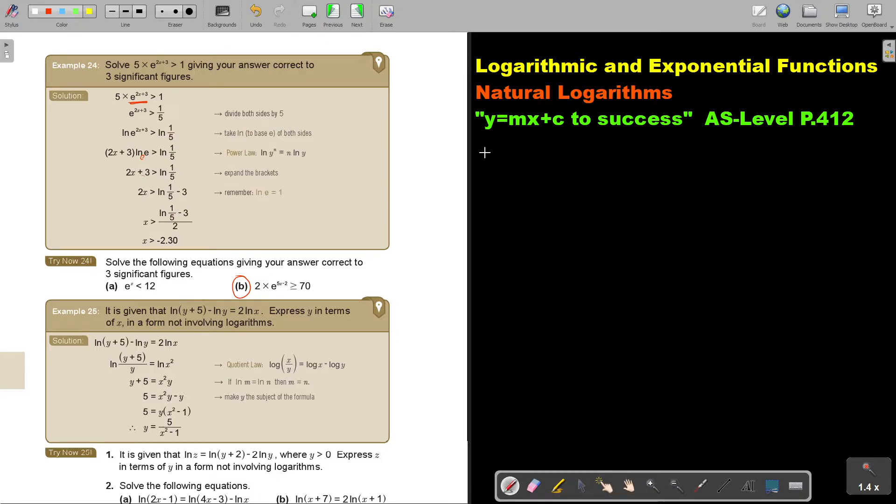Okay, number b. So this is going to be 2 multiply e to the 5 to the power x minus 2. It's bigger and equal to 70. So we do exactly the same.